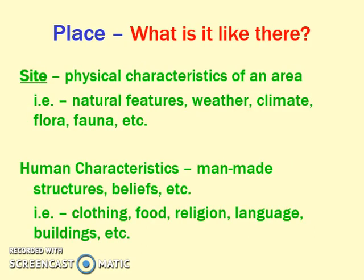For place, you should ask: what is it like there? This gives you the question of site — the physical characteristics you see there: the weather, climate, flora, and fauna. Place should also remind you of the human characteristics: the schools we build, the religion we practice, the language we speak, the clothes we wear, the food we eat — all of those things are a part of place as well.